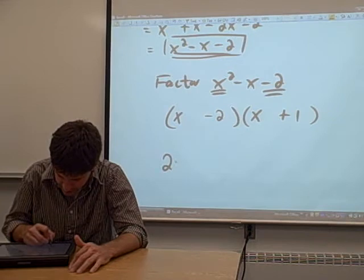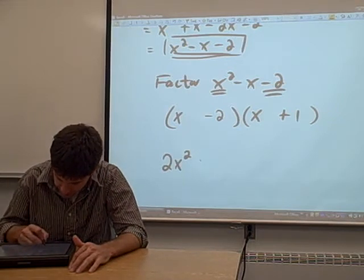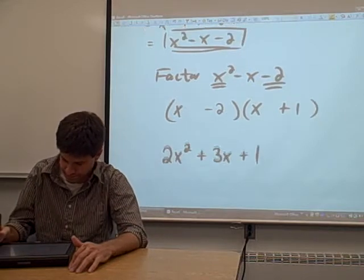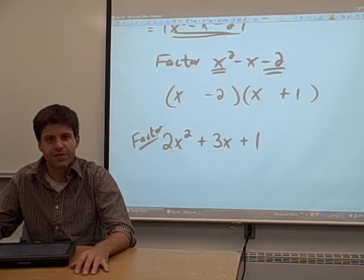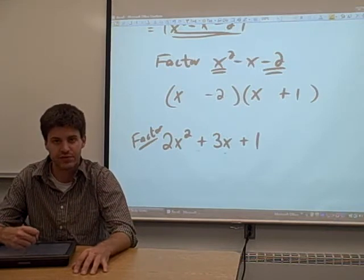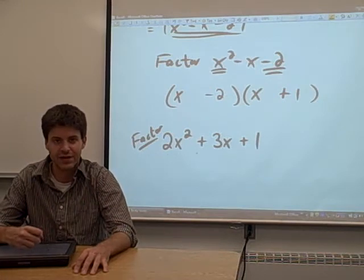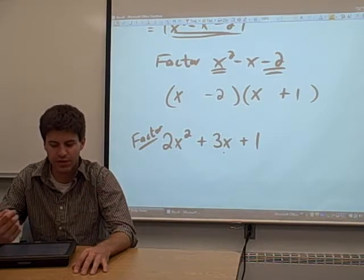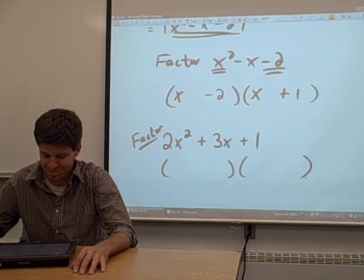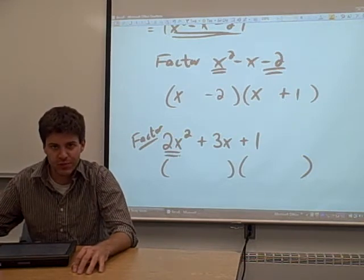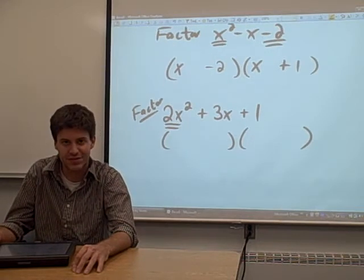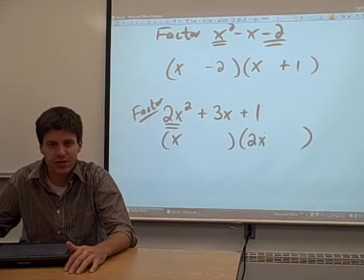Let's try another one — something with a 2 in the first term this time: 2x squared plus 3x plus 1. The first thing you always look for is whether you can factor a term out of each of the three terms. You can't pull anything in common out of these three terms, so that's not going to work. We know that if this can be factored, it's going to factor into two binomials. From the 2x squared term, if you're going to multiply two terms to get 2x squared, you're going to want them to be x and 2x.